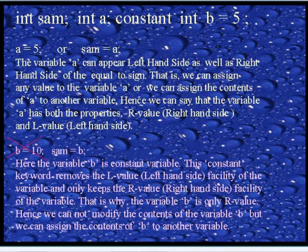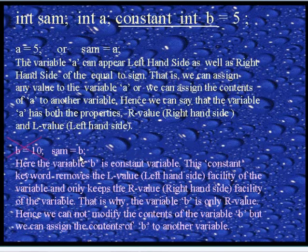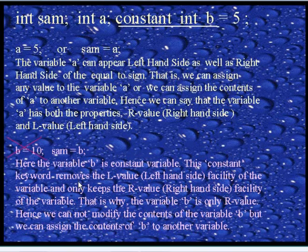Now, B is a constant integer variable, which means we cannot modify the contents of B, but we can assign the contents of B to another variable. Here I assign the contents of B to the variable SAM. The constant keyword removes the L-value (left-hand side value) facility of the variable and only keeps the R-value (right-hand side value) facility.